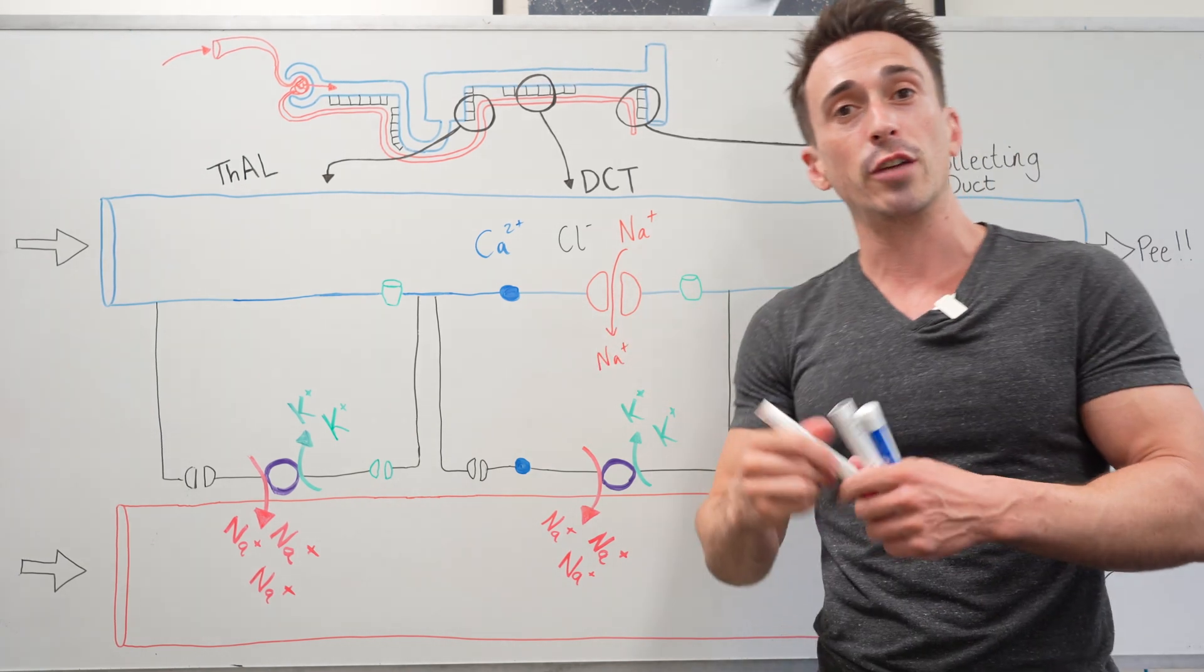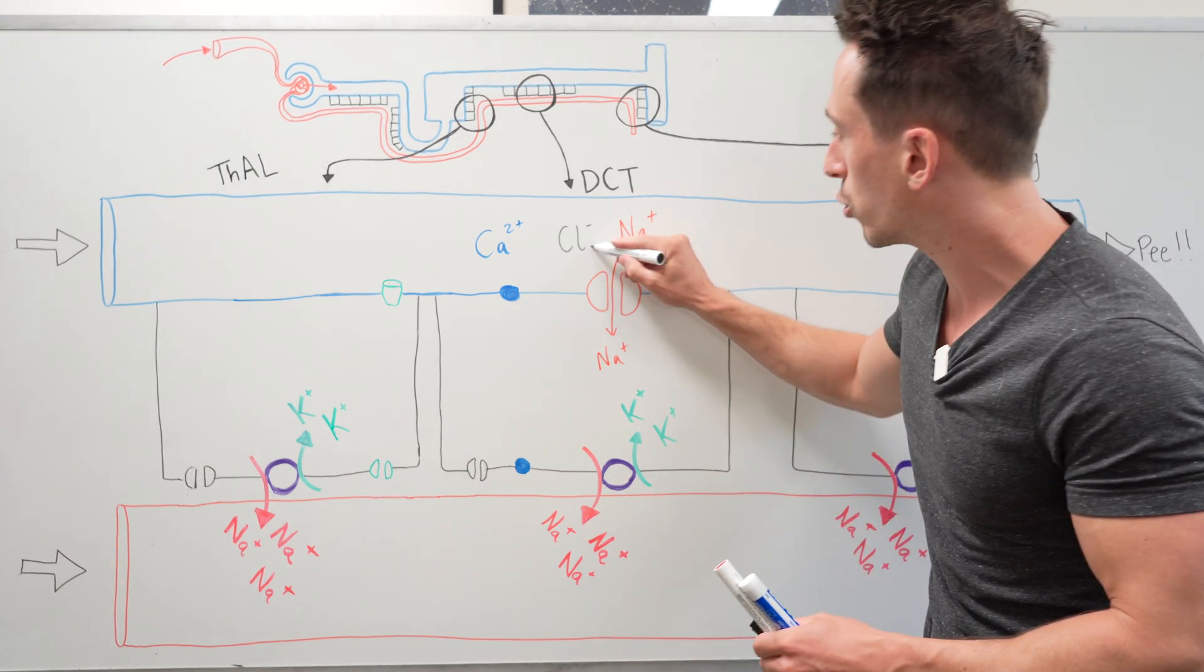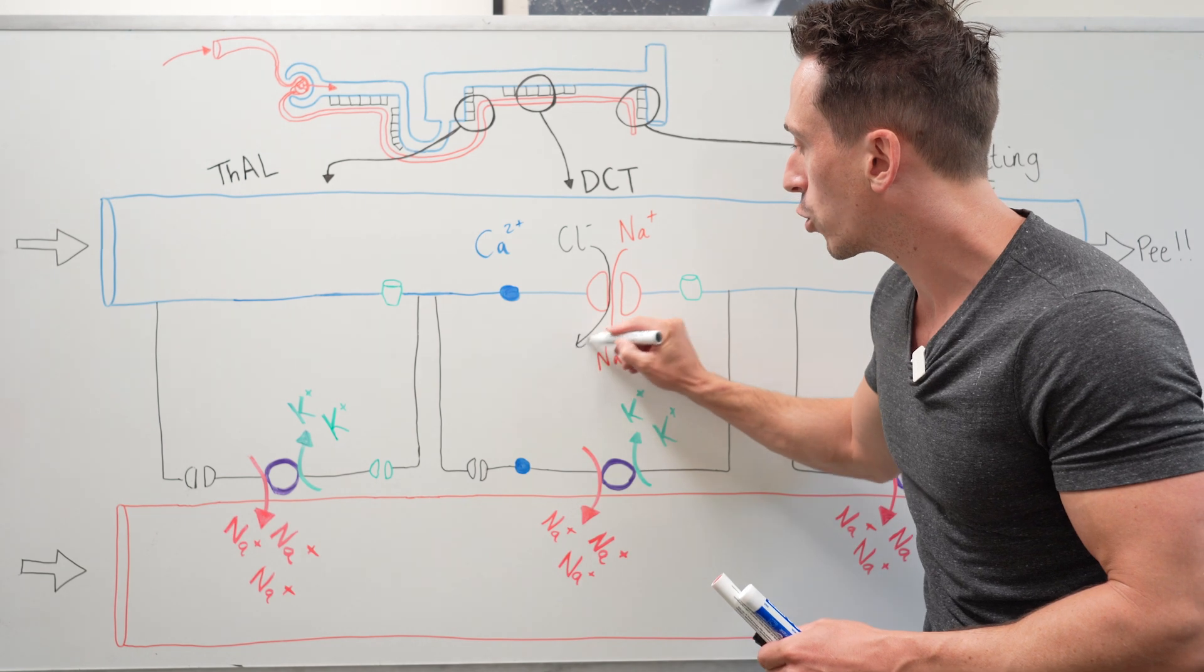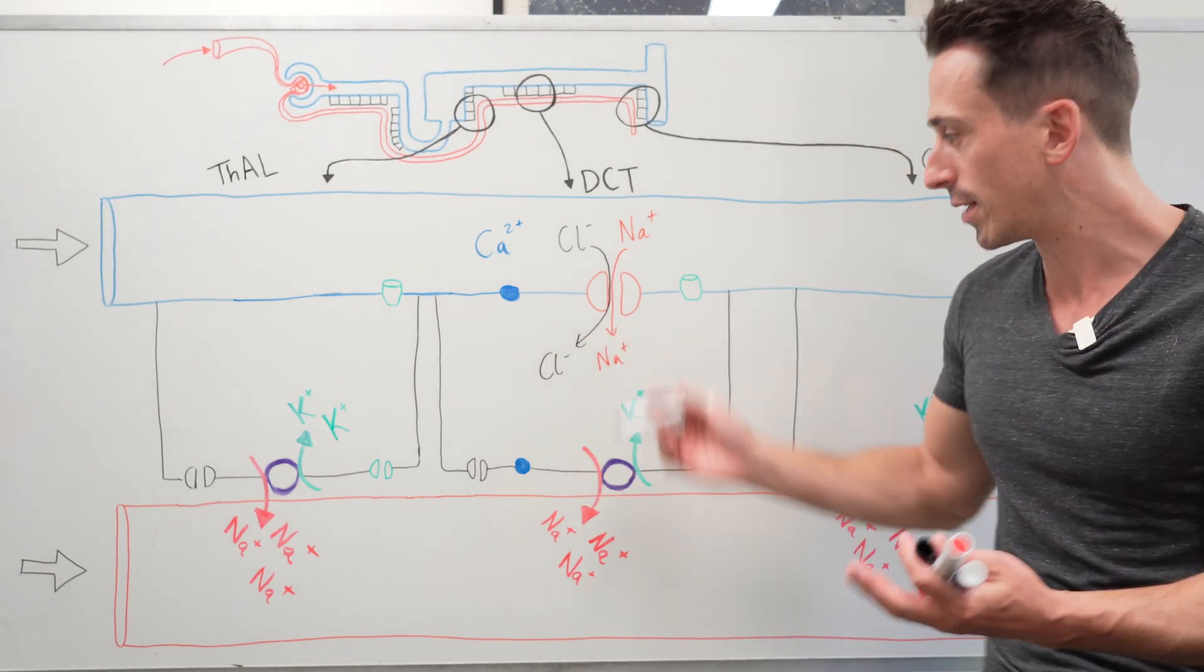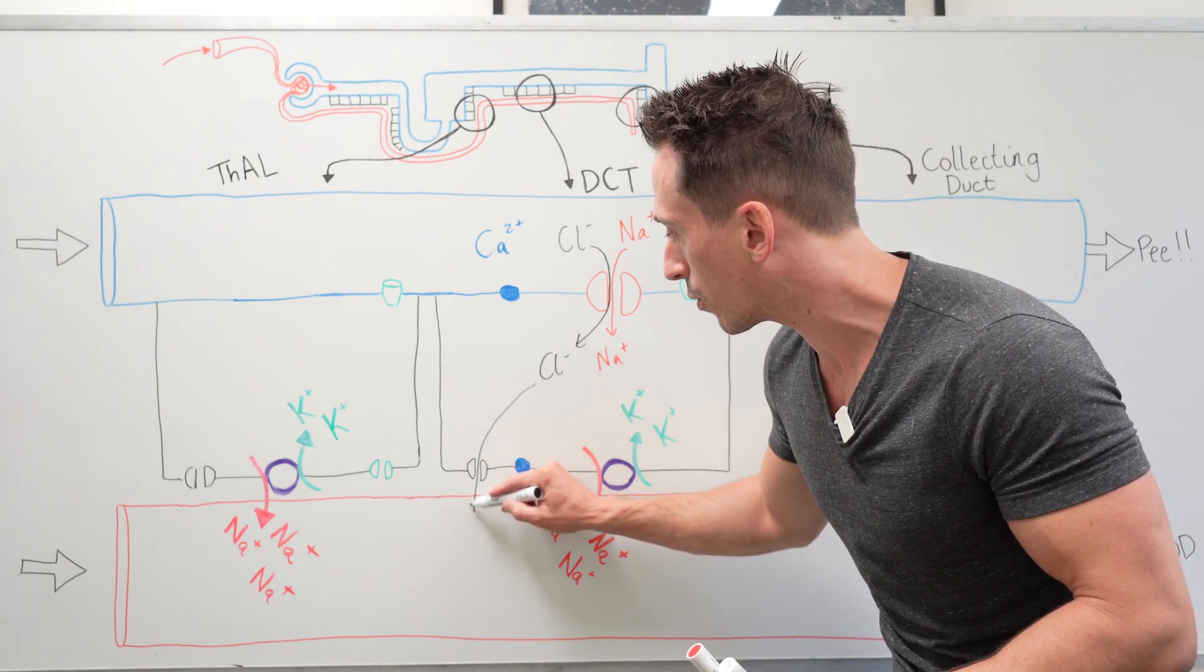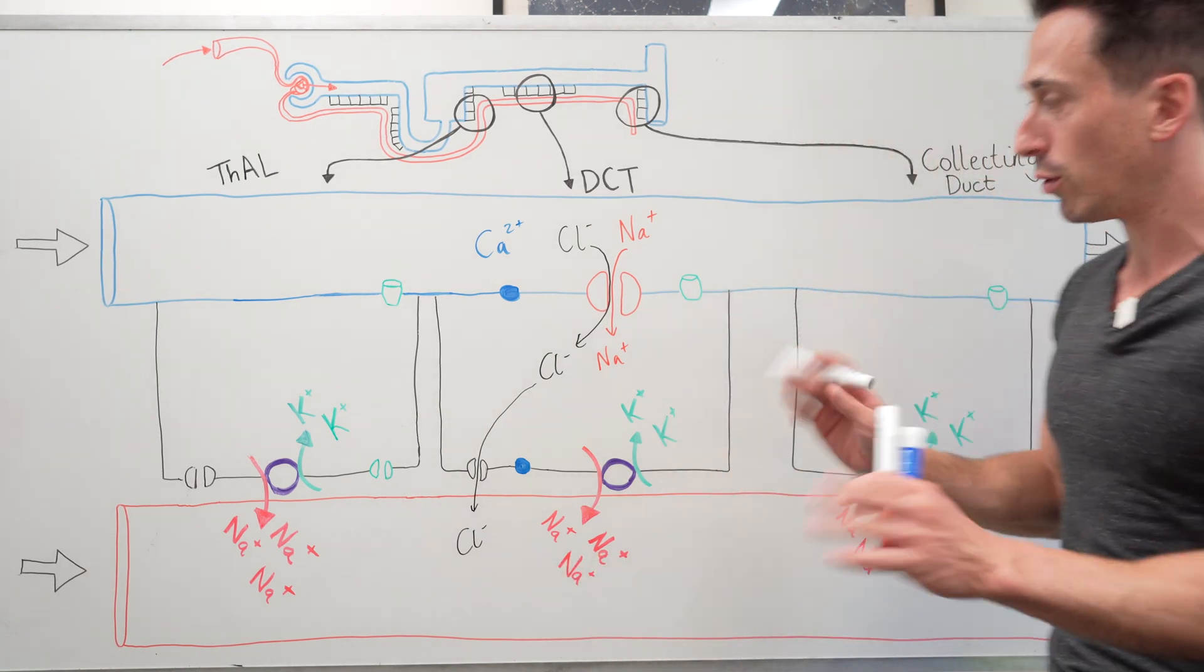This provides energy for some other ions to piggyback and move in. These ions include chloride. So chloride is also moving in to the cell of the distal convoluted tubule as well and this chloride can actually just diffuse out through chloride channels into the blood being reabsorbed.